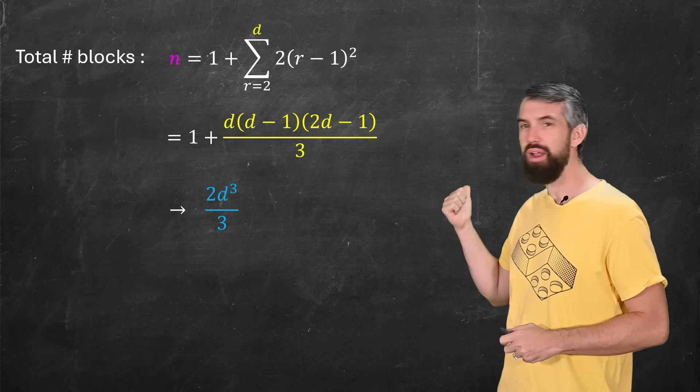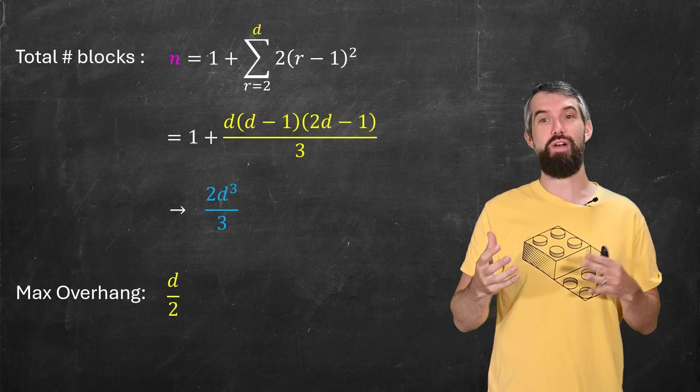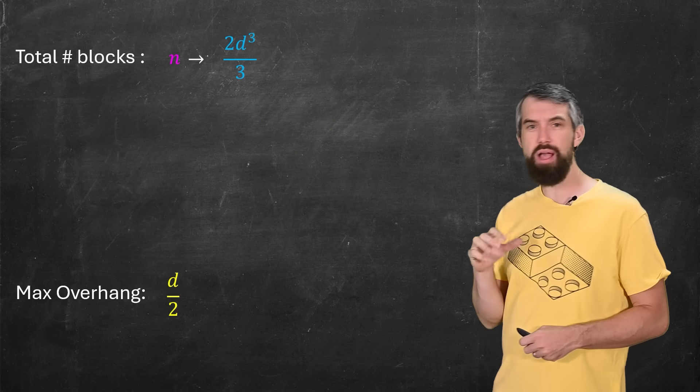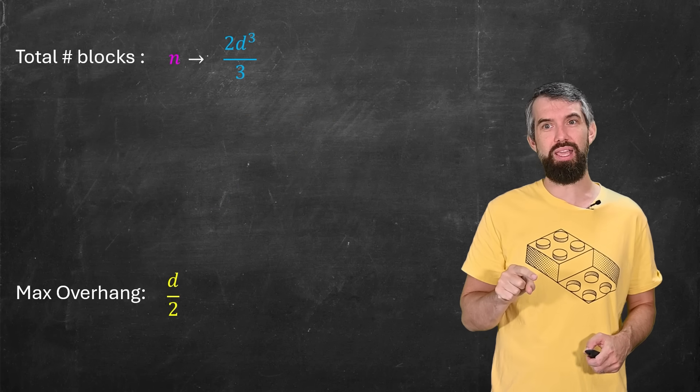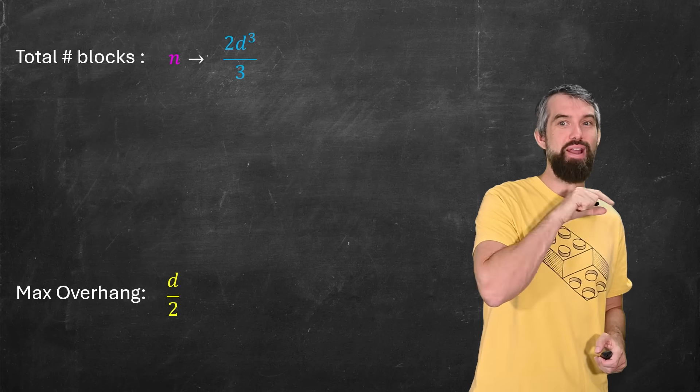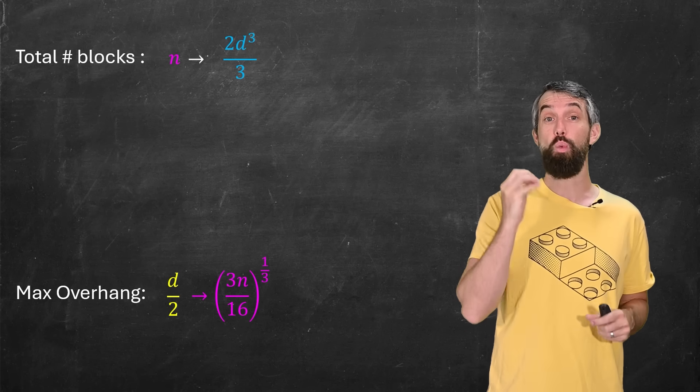So we've decided that for this number of blocks, we achieve an overhang of D divided by two. So playing around with our top formula, if N is tending to 2D cubed divided by three, I can solve that for D and get that D divided by two is tending to 3N over 16, all to the power of one-third.